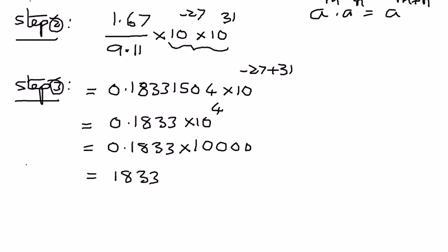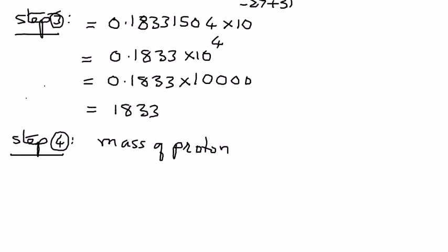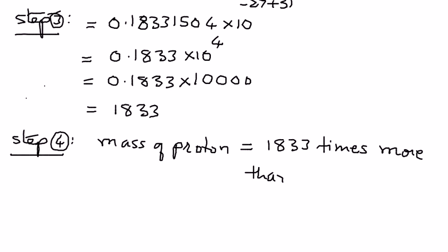To tie it back into the problem, the mass of proton is equivalent to 1833 times the mass of electron. That is what this example is explaining to us.